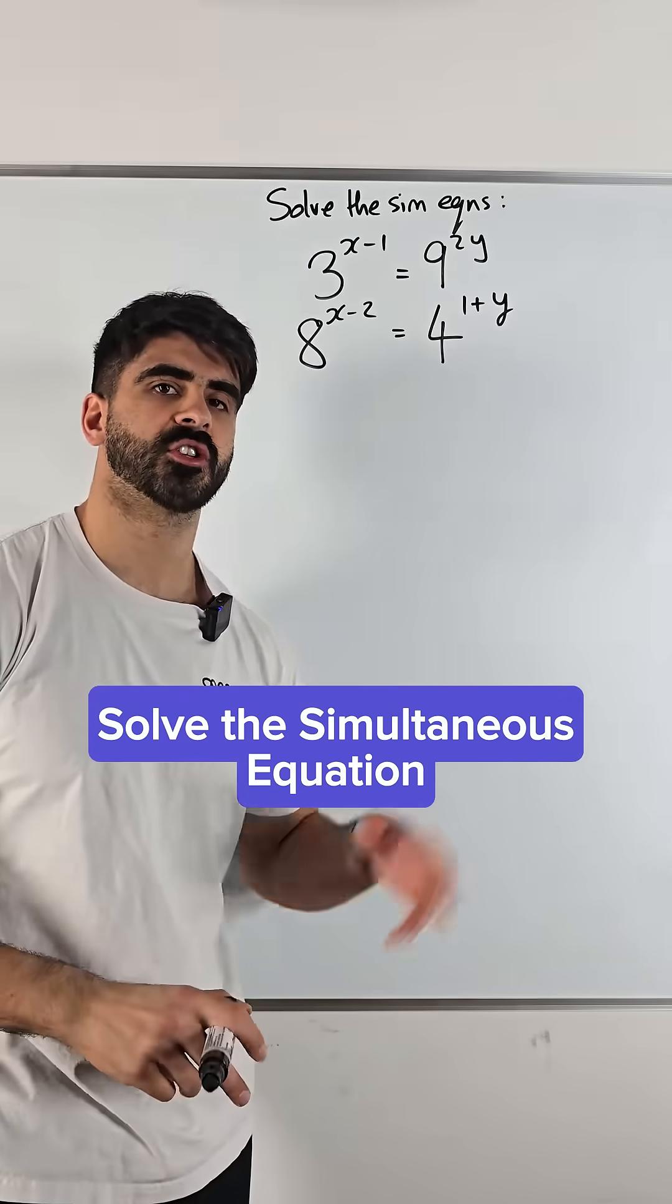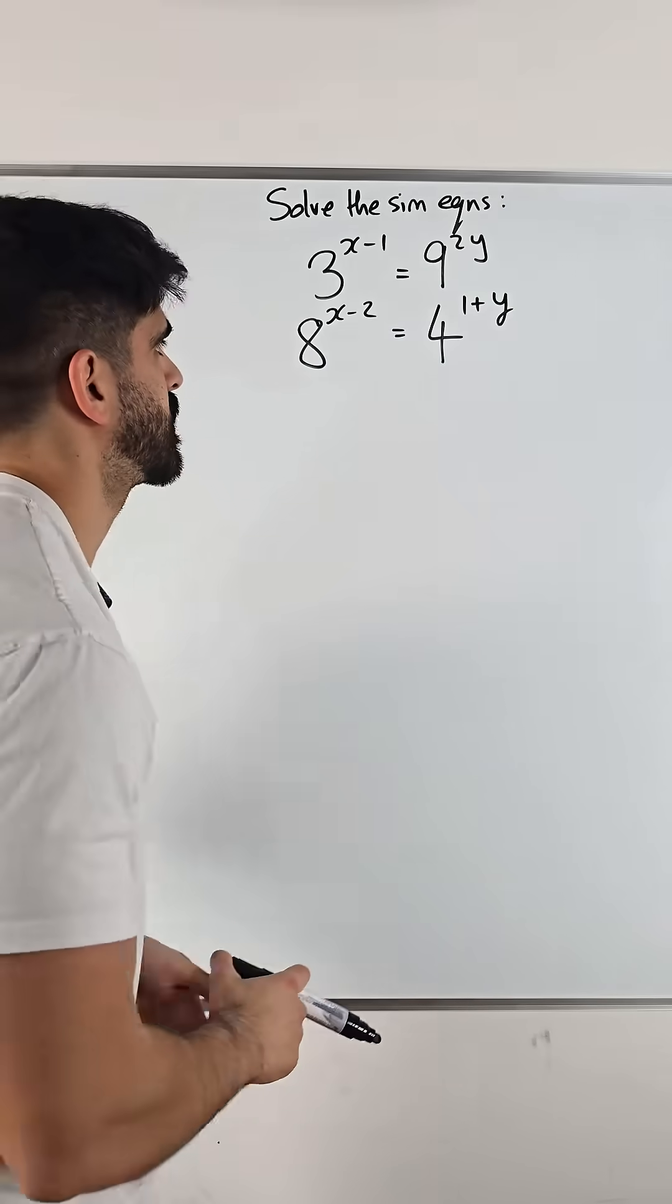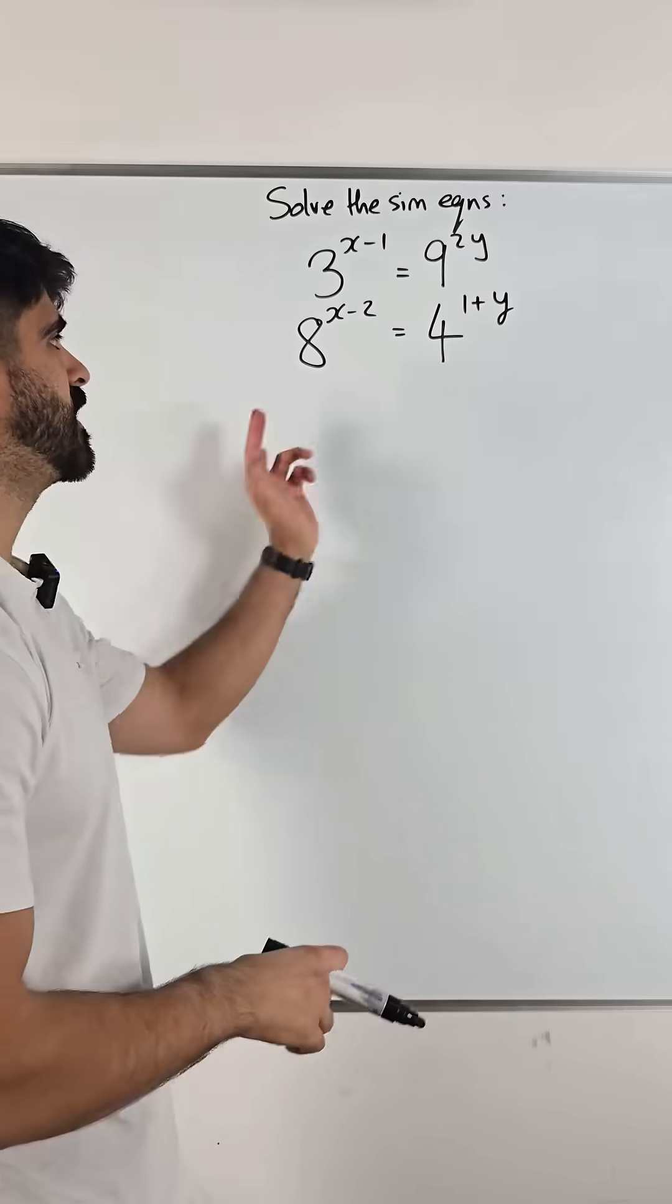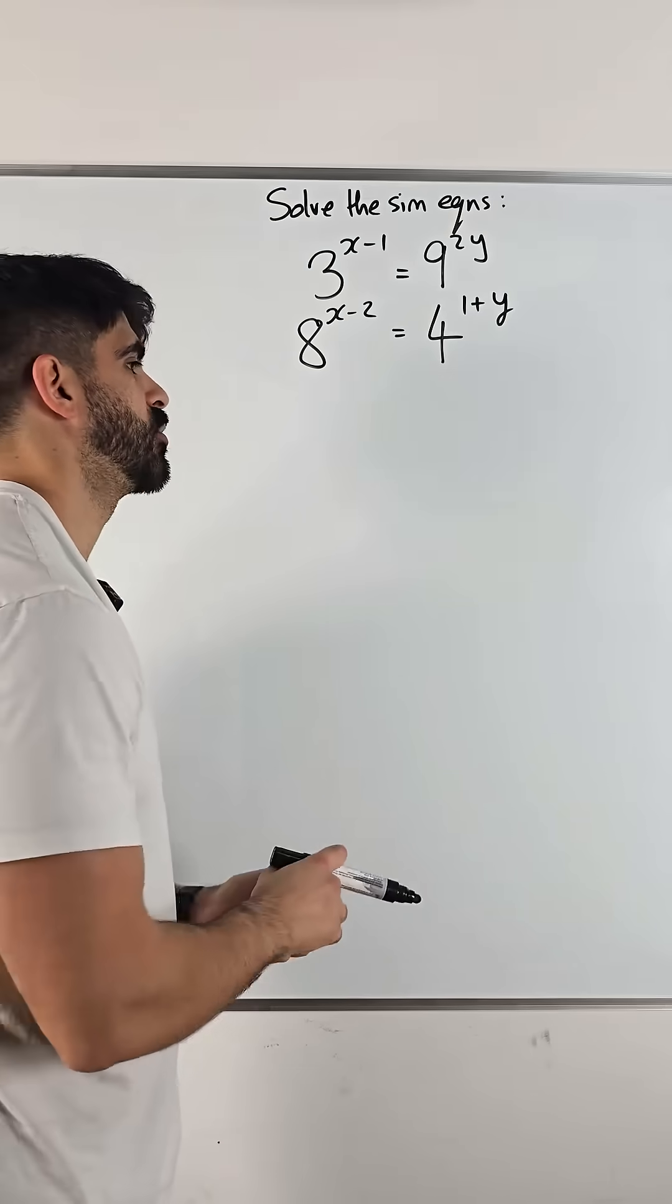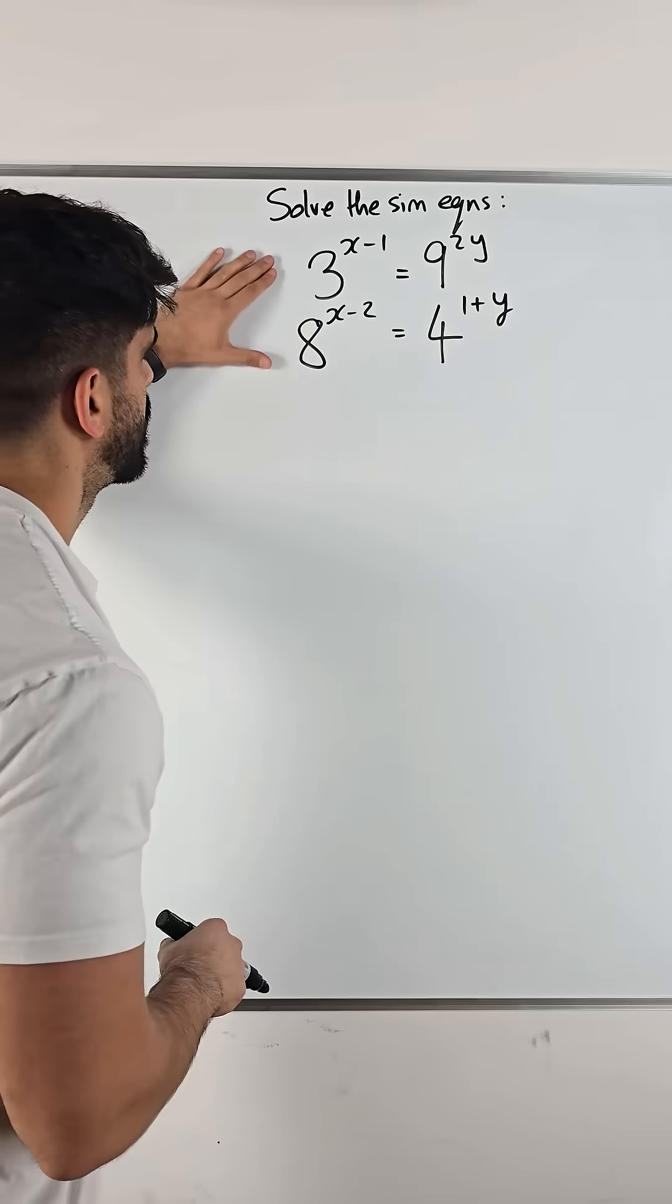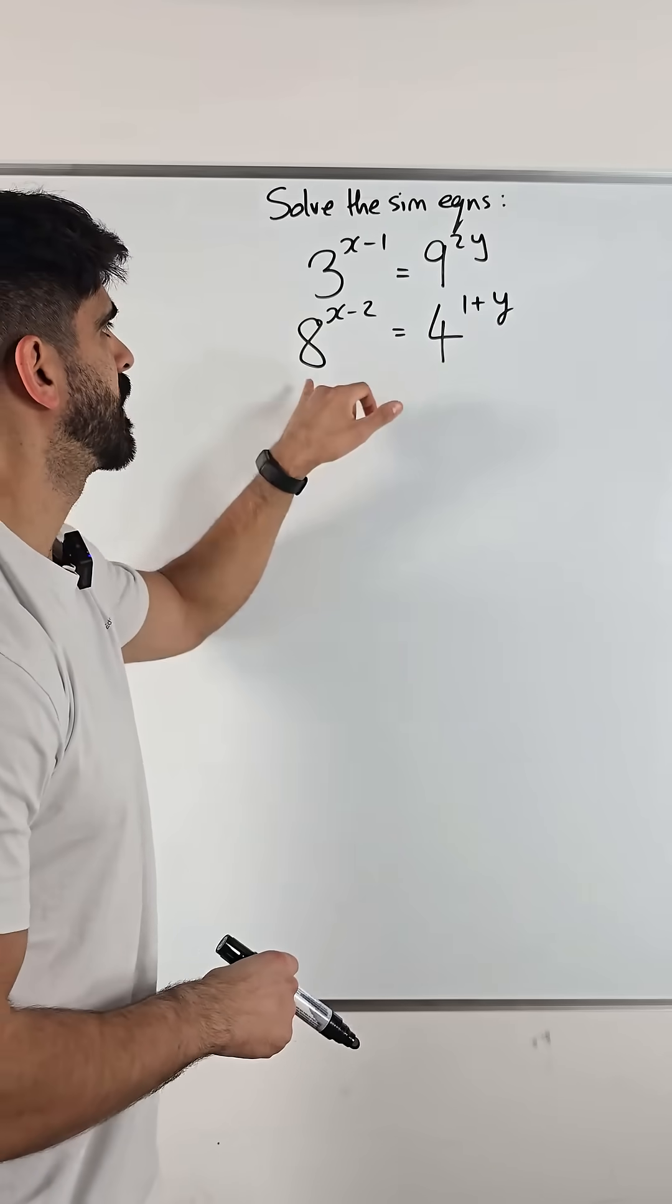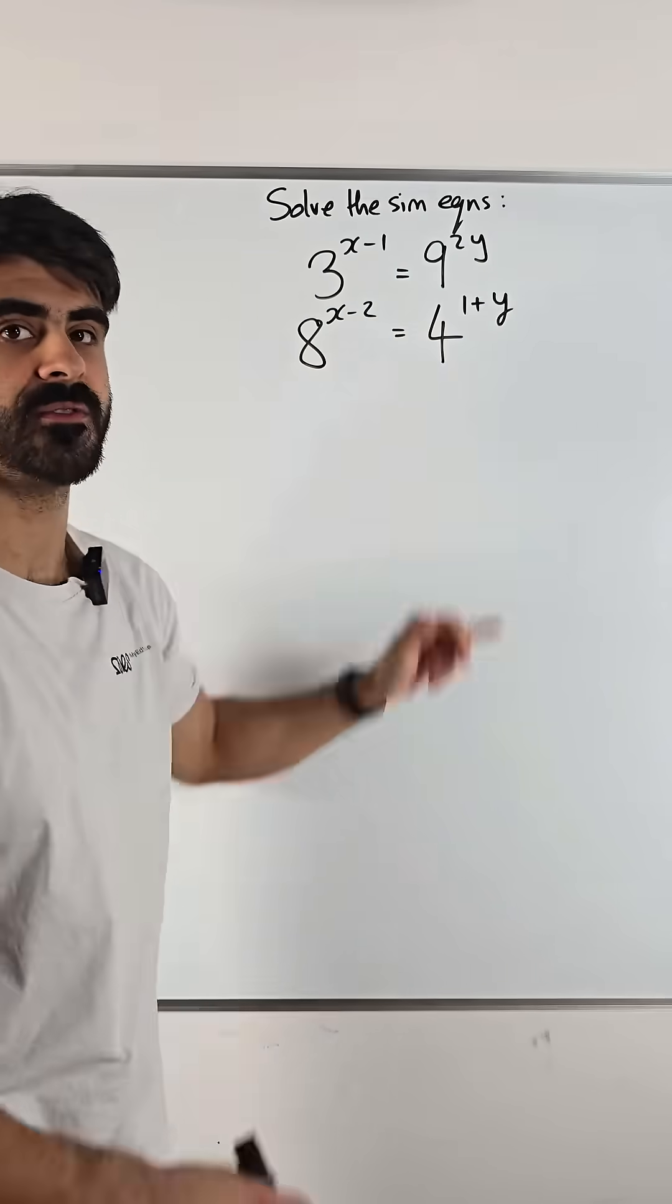Grade 7 to 9 students should be able to answer a question like this. If not, you need to watch this and save this video as part of your index rules and simultaneous equations revision. So, how do we solve something like this? 3 to the power of something equals 9 to the power of something and 8 to the power of something equals 4 to the power of something.